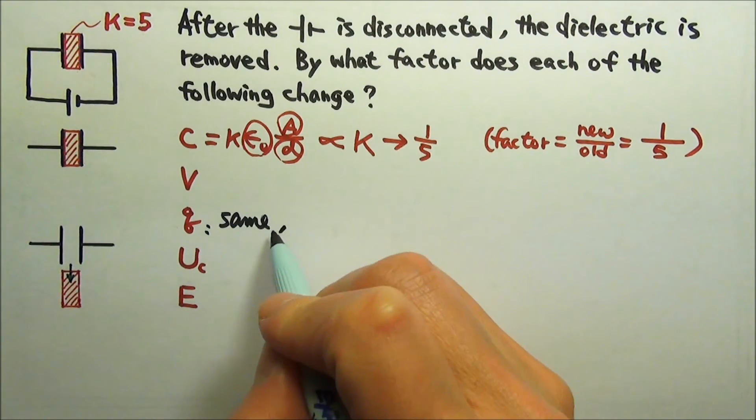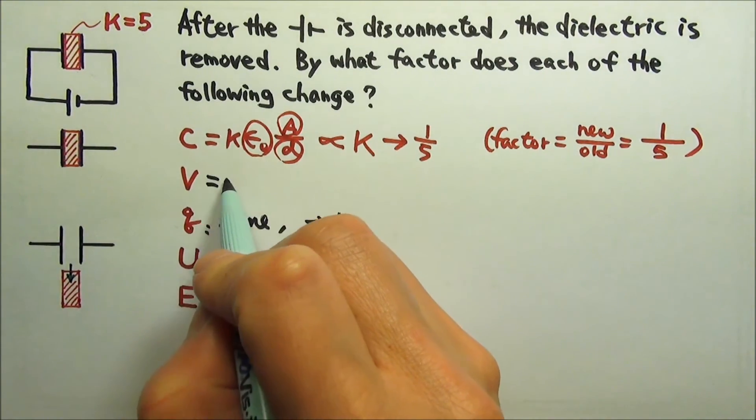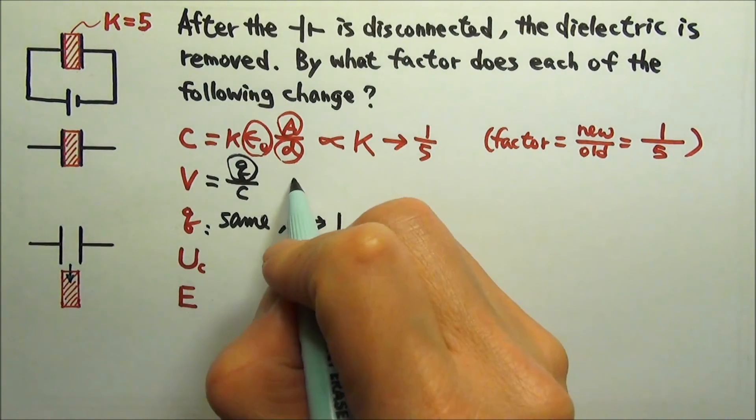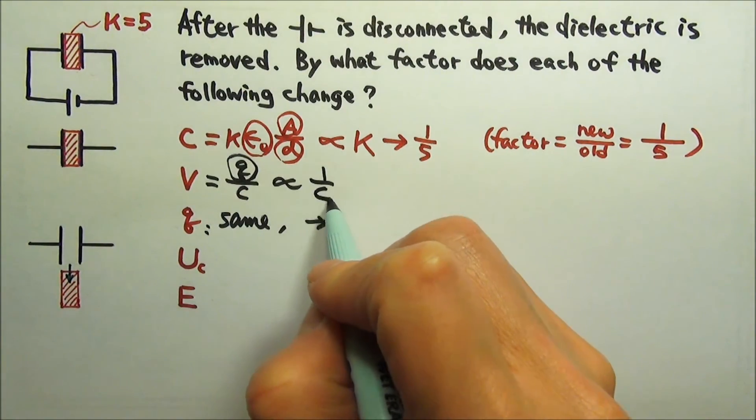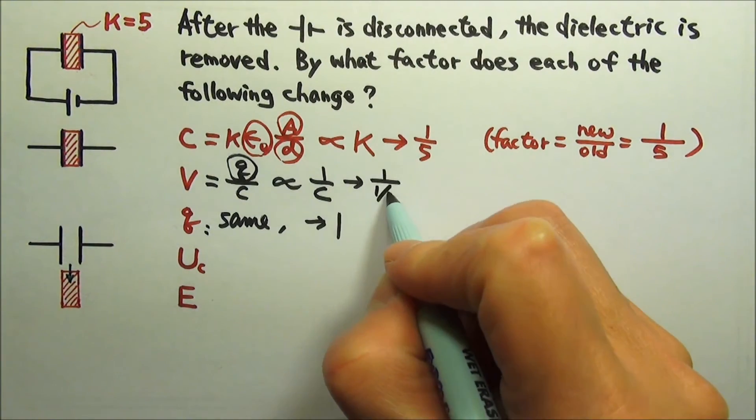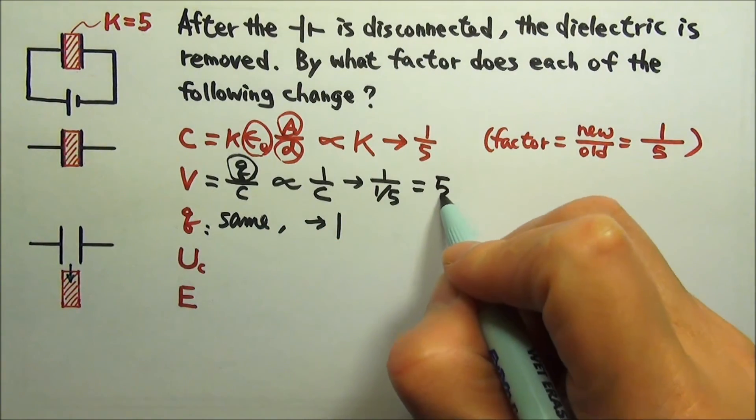Or we can say it changes by a factor of 1. Since q equals cv, so v equals q over c. The charge stays the same, which means the voltage will be proportional to 1 over c. And c changes by a factor of 1/5, so the voltage changes by a factor of 5.